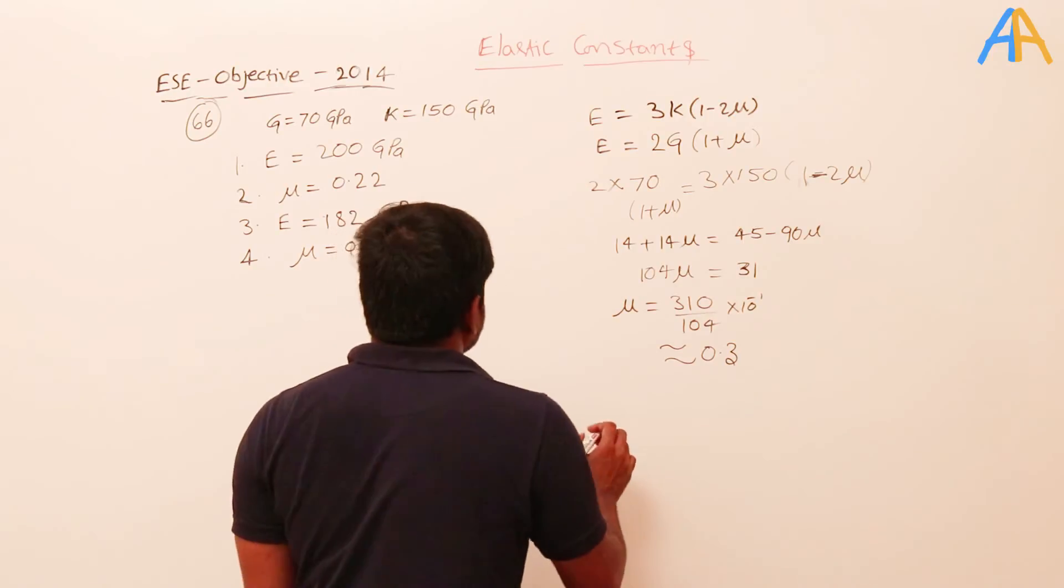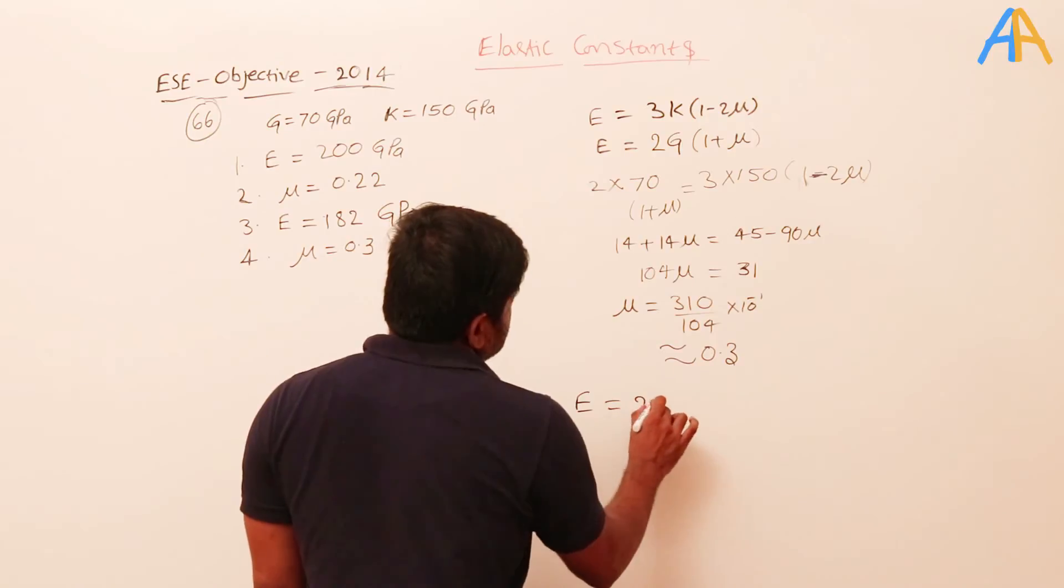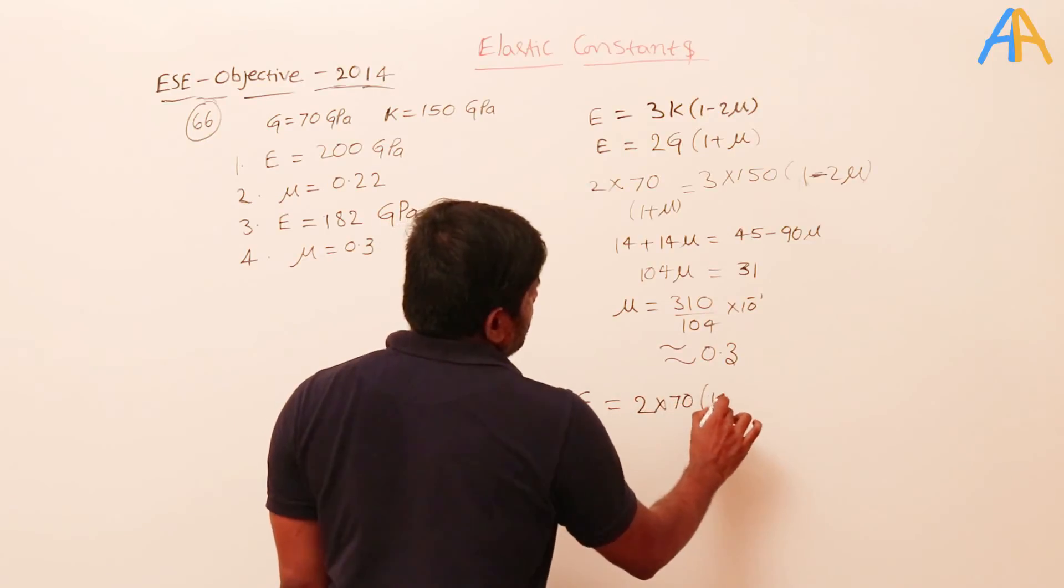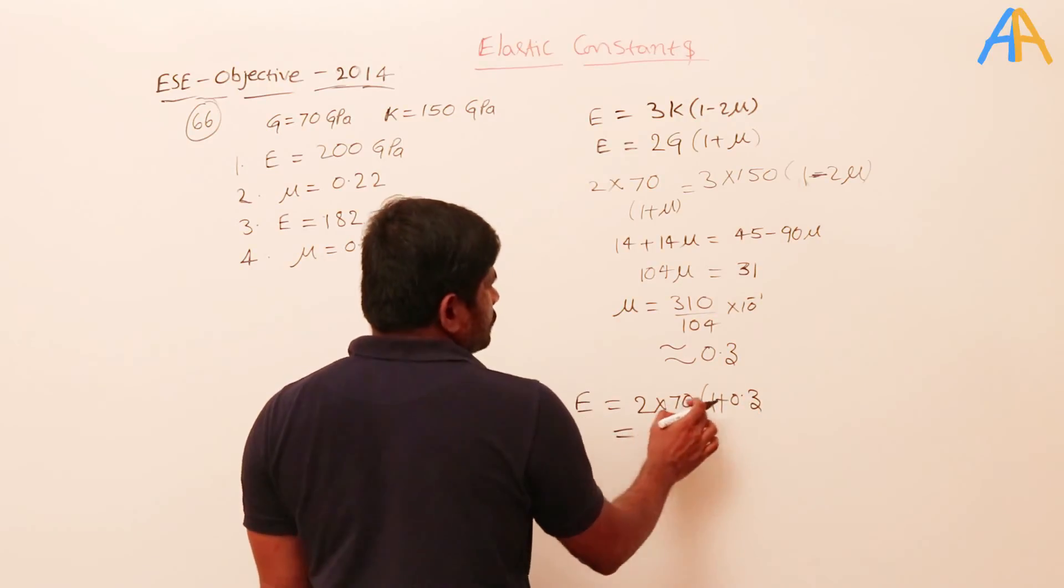What is the E value? If I substitute, E equals 2 into G, that is 70, into 1 plus μ, that is 1 plus 0.23. That means it is 1.23 times 2 into 7, which is 14.